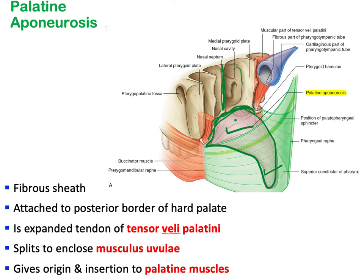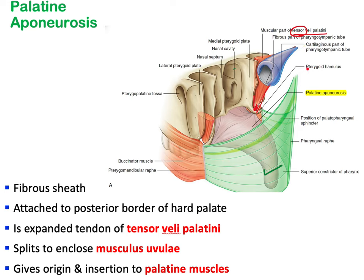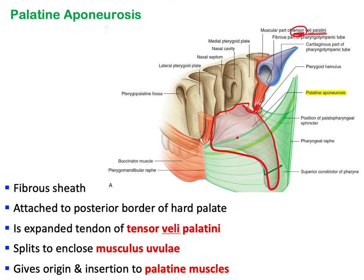The tensor veli palatini is an important muscle of the soft palate. Its tendon expands to cover the soft palate and uvula, forming the palatine aponeurosis. Note: this is the tensor, not the elevator — the levator is more functionally important, but let's first focus on the tensor veli palatini.